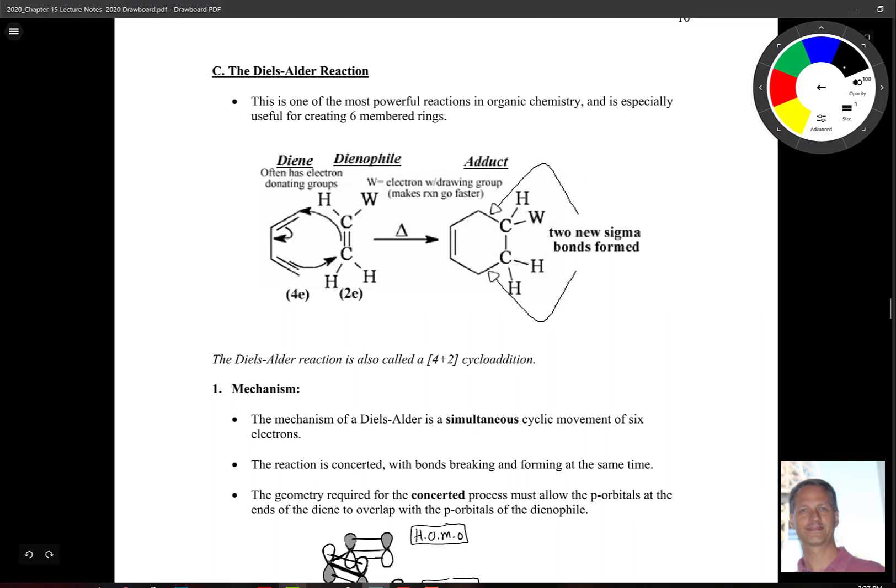The reaction's mechanism is pretty straightforward if you look down below. There's two parts. There's a diene, so it's the compound that contains two alkenes. It has four electrons along with it. And then there's something called the dienophile. Remember, phile means love. It loves the diene. It has just one double bond, and it typically has this W group on it. W means it's an electron withdrawing group. It simply makes this reaction go faster.